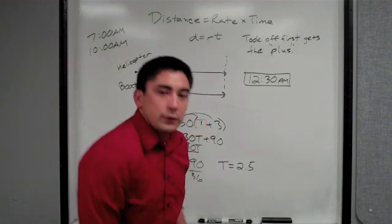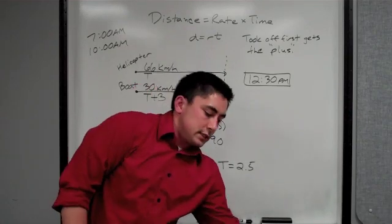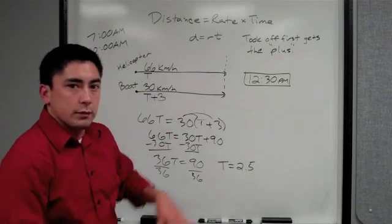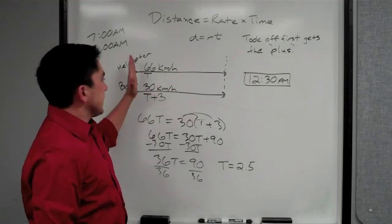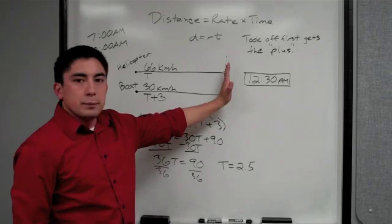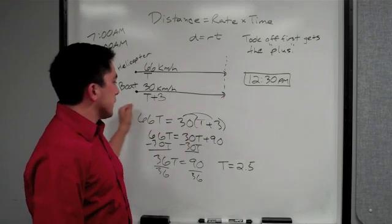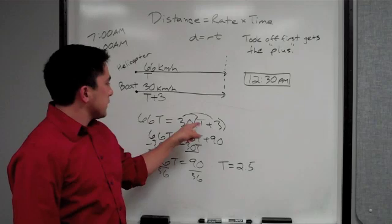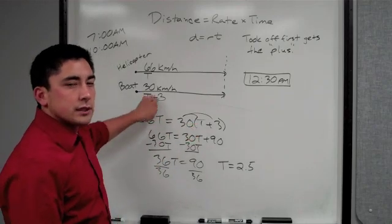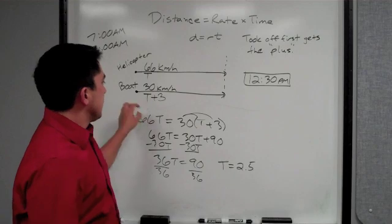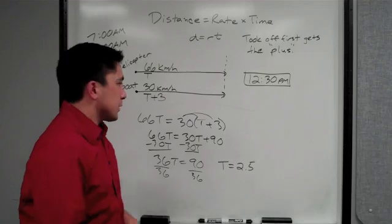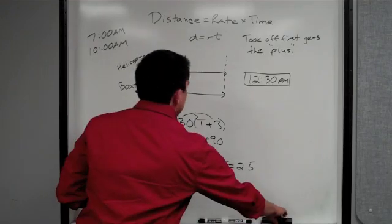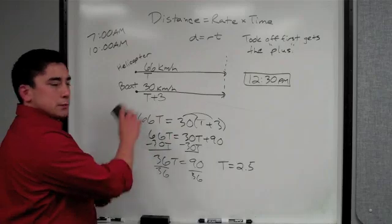So the next problem, we only did three examples in class. Really quick for this one: distance is equal to this distance as well. Taking off from the same spot, going to meet up at the same spot, set them equal to each other. Don't forget to put T plus 3 in parentheses because you're going to distribute.